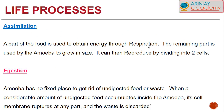Assimilation takes place to obtain energy through a process called respiration. The remainder of the energy is used for the amoeba to grow in size, and when it has successfully grown to a particular size, it can reproduce by dividing into two cells. For egestion, since the amoeba has no fixed place to get rid of undigested food, when a considerable amount of undigested waste accumulates, the cell membrane ruptures at any part and the waste is discarded.